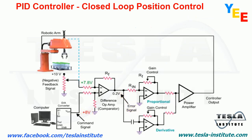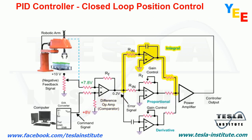In this condition, the difference op-amp creates a steady voltage and the arm continues to move. To overcome the steady-state error, an integral amplifier is added to the circuit.